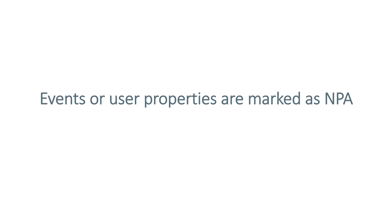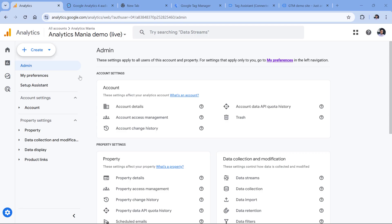The next reason is related to NPA, which stands for non-personalized ads. In Google Analytics 4, you can mark certain events or user properties as NPA. If an audience contains any event or user property that is marked as NPA, then that audience will not be populated in Google Ads. Now let's take a look at how we can check this.